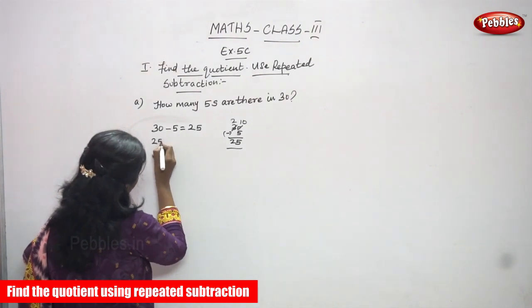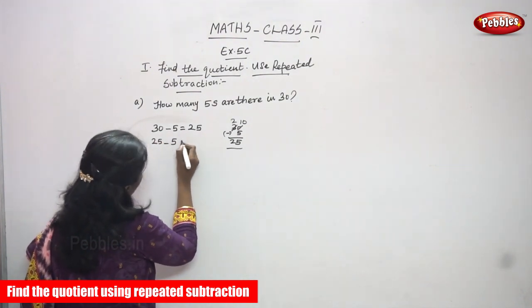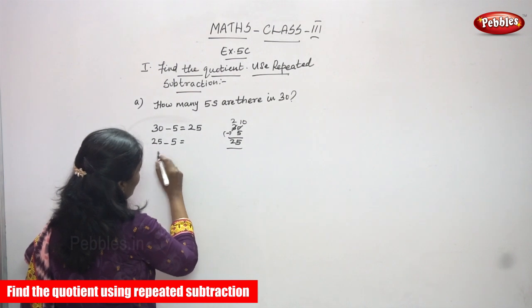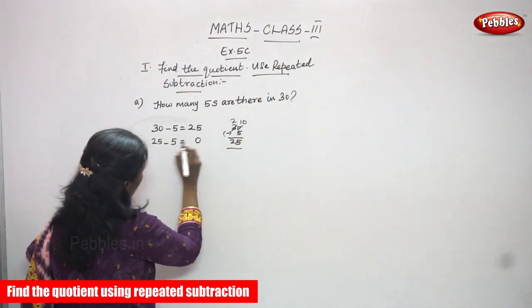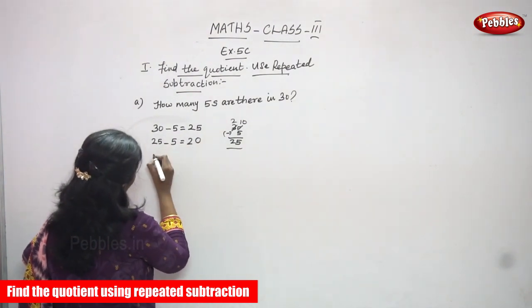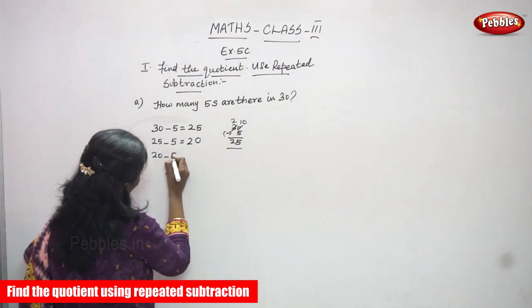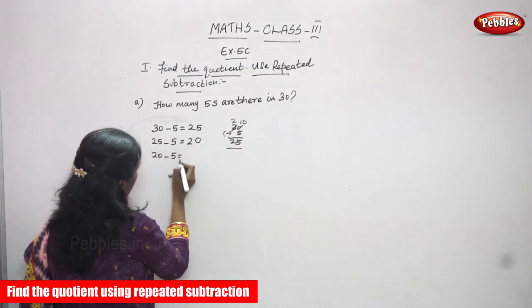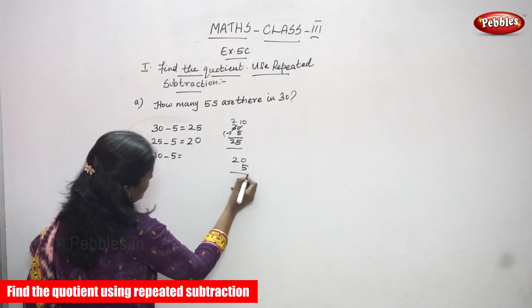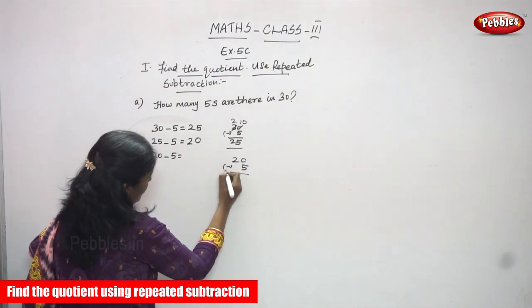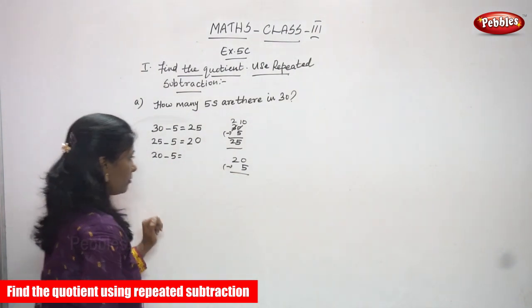Now again, 25 minus 5 — what do you get? 25 minus 5: the ones digit is 0 and the tens digit is 2. So 20 minus 5 — we are going to subtract again.